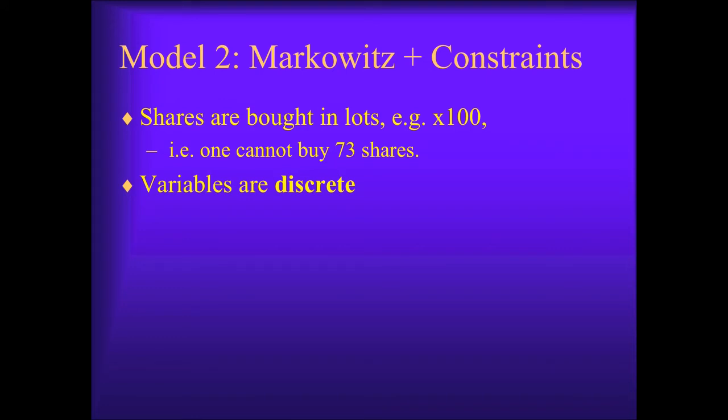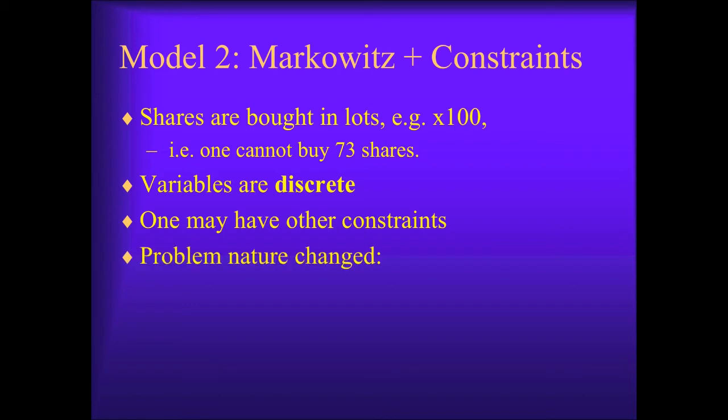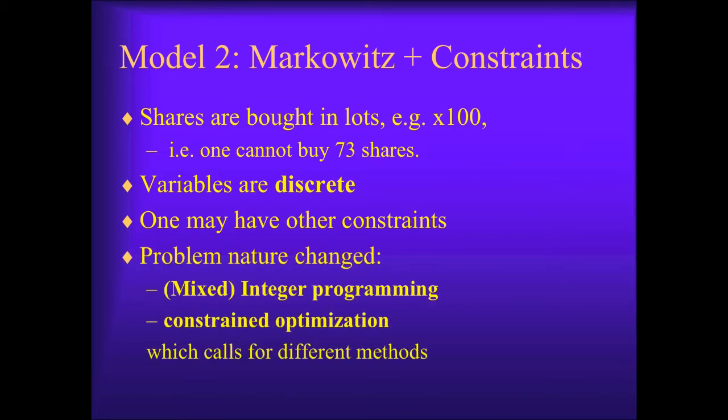For example, in multiples of hundreds. That means WIs cannot be continuous variables. They must be discrete variables. There may be other constraints. For example, shares belong to sectors such as banking, retail, etc. The investor may want to limit the percentage of the investment in the same sector. In that case, the sum of all investments in the same sector must not exceed a certain threshold.